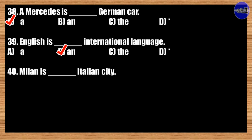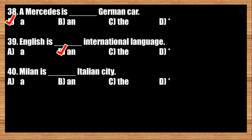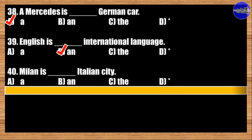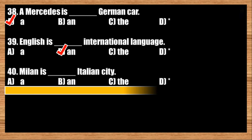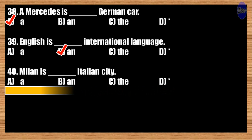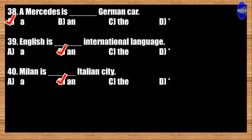Number forty: Milan is blank Italian city. A: a; B: an; C: the; D: blank. The best answer is option B. Milan is an Italian city.